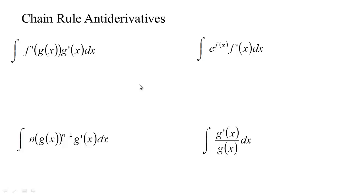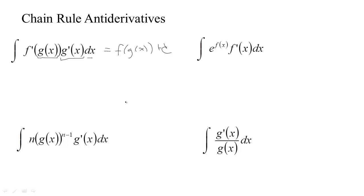When we first learned the chain rule, it helped us take lots of derivatives. I want to look at some antiderivatives that involve the chain rule backwards. If you could recognize that you had the derivative of some function, and then you had a function inside of that, and then its derivative was multiplying dx, then you could tell that that was coming from the chain rule. And the antiderivative would be f of g of x plus any constant.